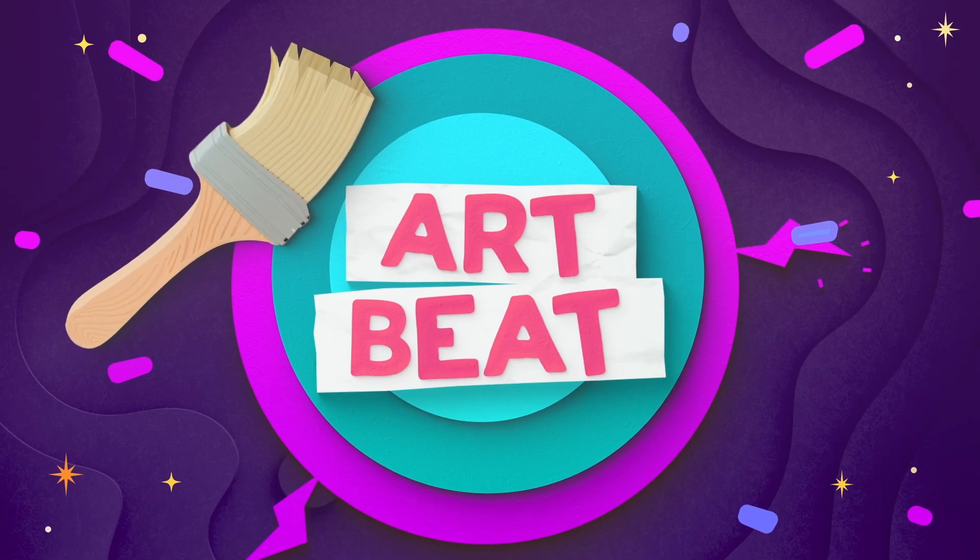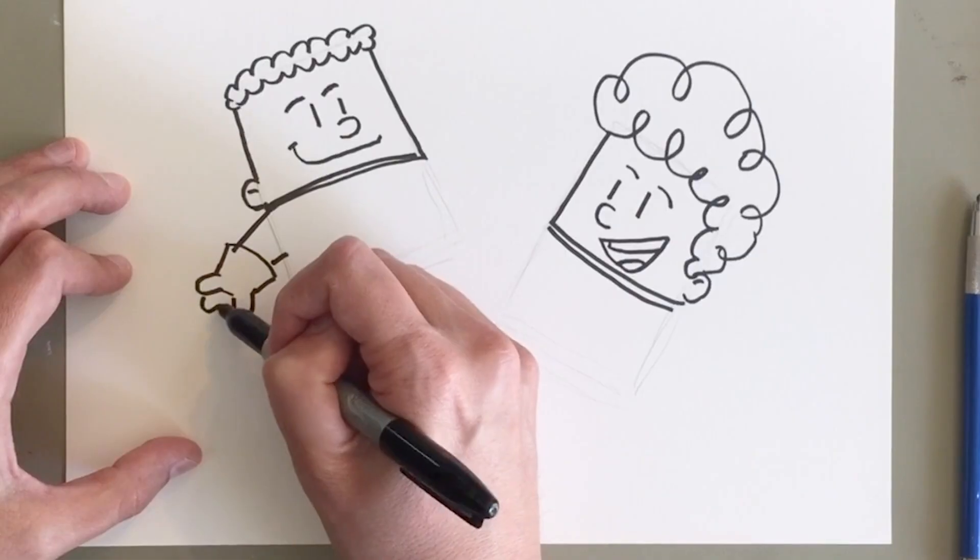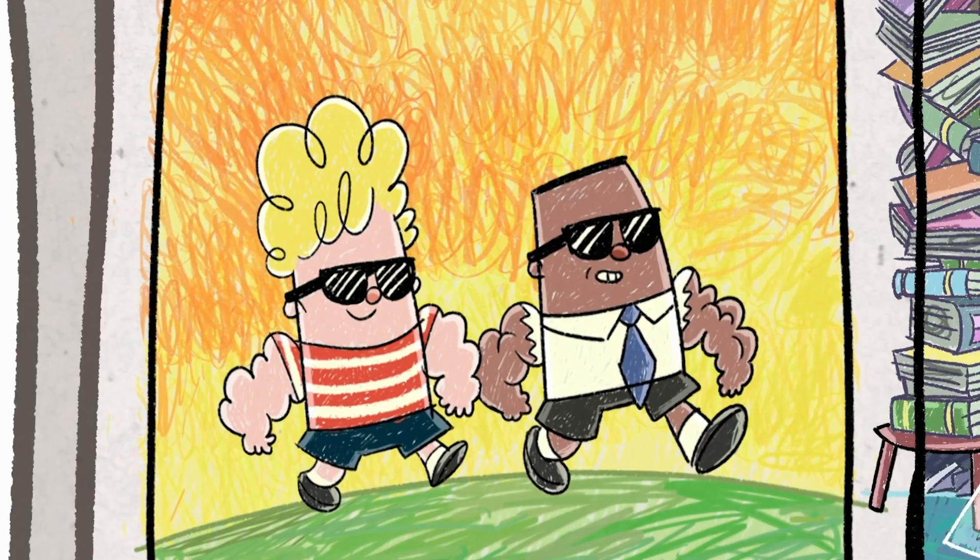Pencils at the ready, guys. It's Artbeat. It's the part of the show where we get expert tuition on how to draw our character of the week. So this week we're drawing Harold and George from the epic tales of Captain Underpants.